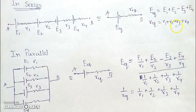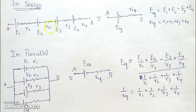Note again: the polarity of e3 is opposite to e1, e2, and e4. So we assume their polarity to be positive and e3 to be negative.